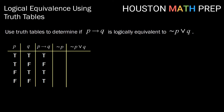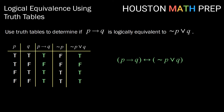P implies Q is only false when we get true then false, so we get true, true, false, true. Not P will be the opposite of P: false, false, true, true. For the disjunction of not P or Q, it is true unless both are false, giving us true, false, true, true. Now we compare these two columns — if they are identical, then P implies Q is logically equivalent to not P or Q.